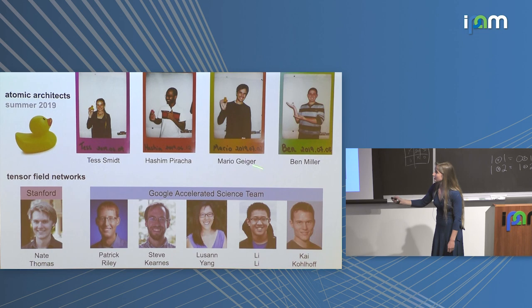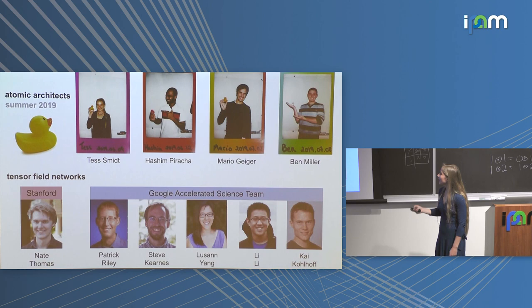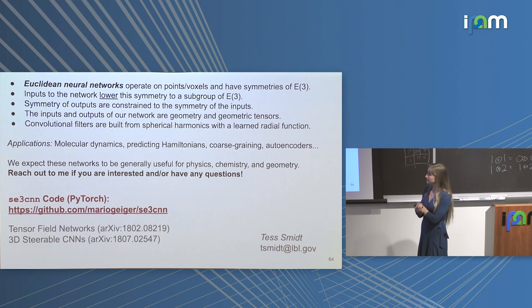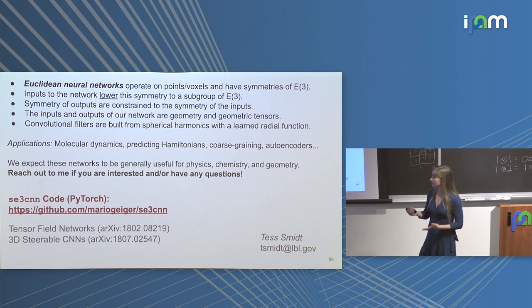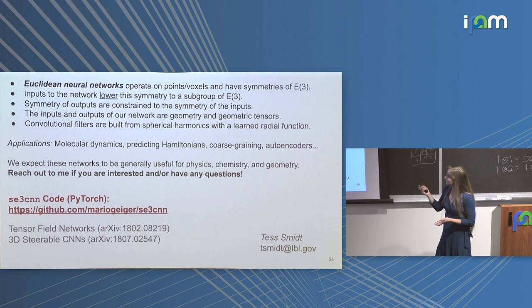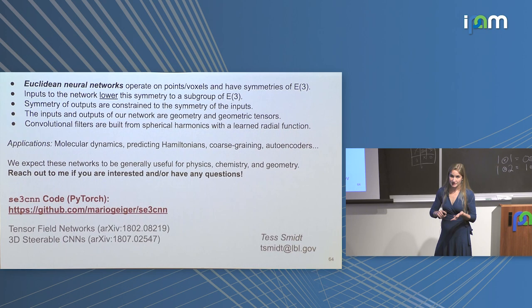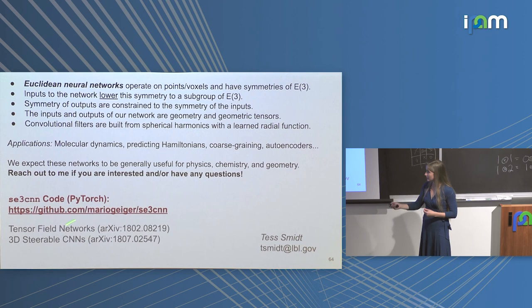Big shout out to my summer interns Mario Geiger, Ben, and Hashim, and to my collaborators on Tensor Field Networks. To summarize: Euclidean neural networks operate on points and voxels and have the symmetries of Euclidean space. The inputs lower this symmetry to whatever subgroup is appropriate for the problem. These networks naturally handle geometric tensors and geometry. Convolutional filters are built from spherical harmonics and we use tensor products to accommodate geometric tensors throughout. We have many applications — reach out if you have questions. Here's our code, the papers, and my email. Thank you.